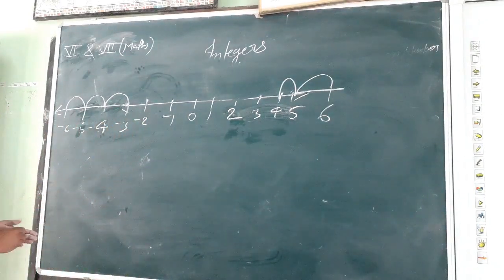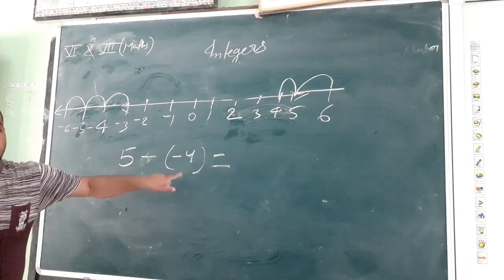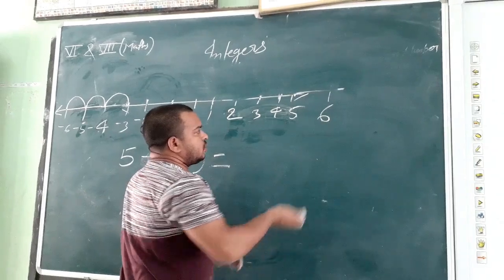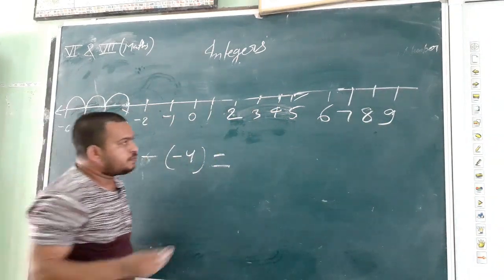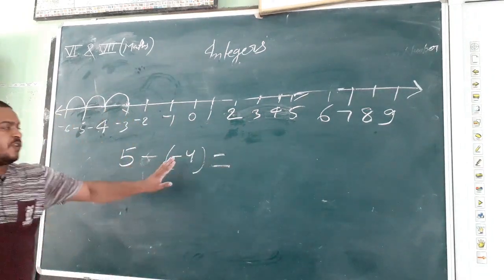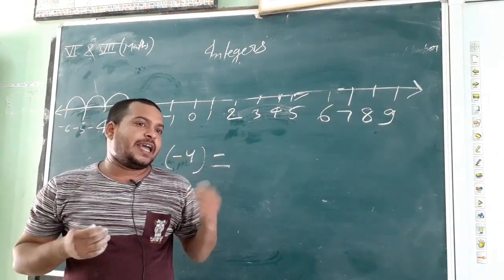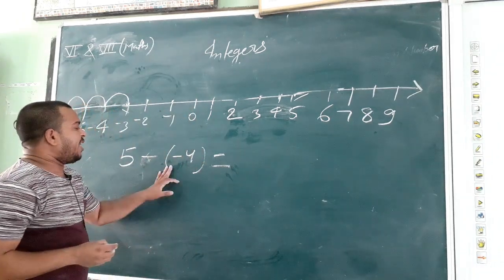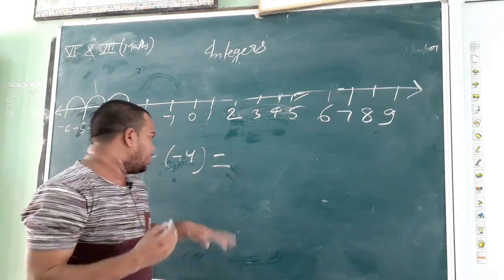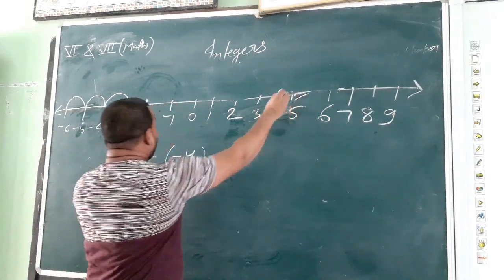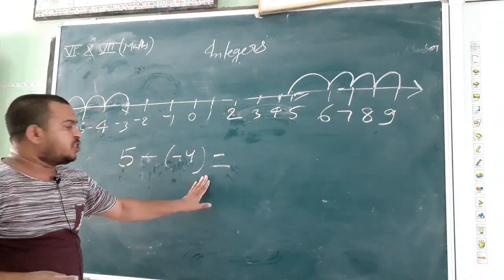But what happens if we have to subtract a negative number on a number line? Suppose we have 5 and we want to subtract minus 4. To subtract a negative number, we will move towards the right. We move 4 steps right from 5: 1, 2, 3, 4. So 5 minus minus 4 is equal to 9.